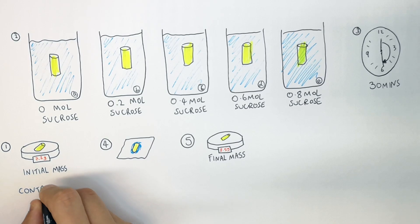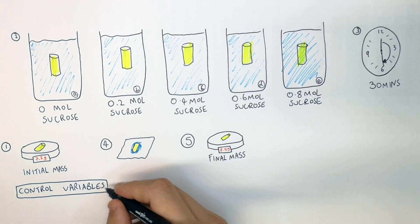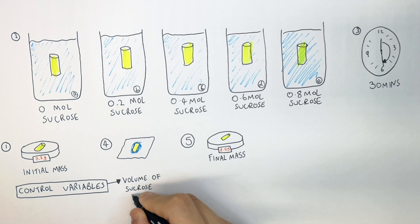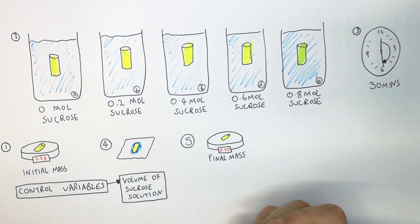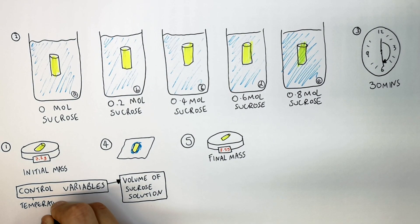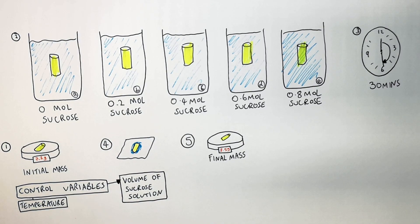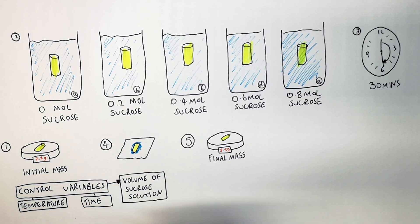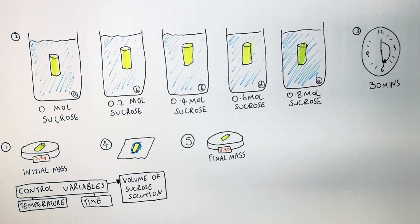So what are the control variables for this stage? Well, we must control the volume of sucrose solution in each of the beakers. We must also control the temperature in each of the beakers. And we must also control the time in which the potato is kept in the sugar solutions.